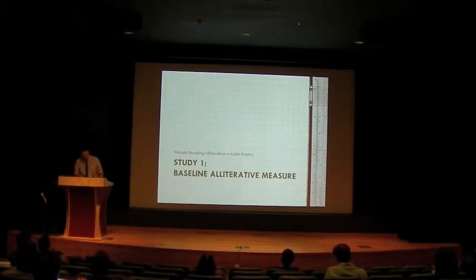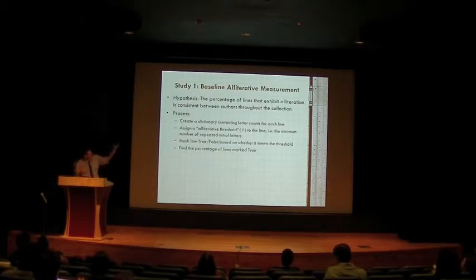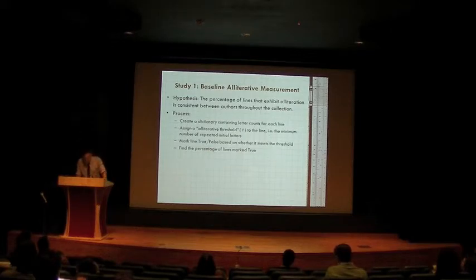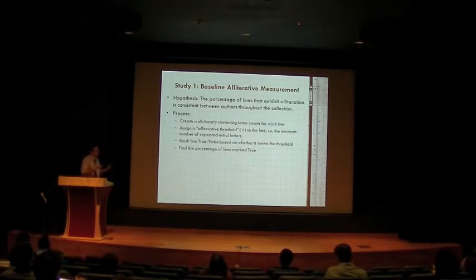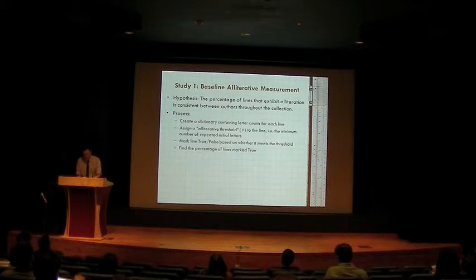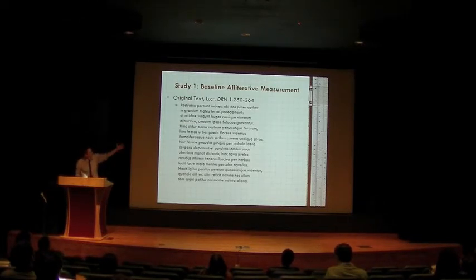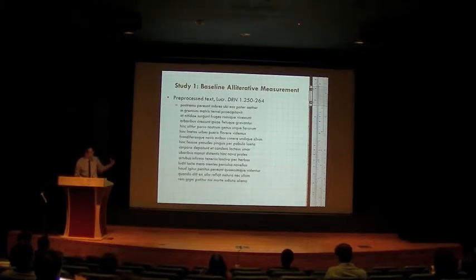I wanted to start with as distant a reading as possible of my data set and figure out what's going on in general. The hypothesis: the percentage of lines that exhibit alliteration is consistent between authors throughout the collection. For a given author, I create a dictionary of the letter counts for each line, assign an alliterative threshold, and if something meets that threshold in the line it's marked as true — then I find the number of true lines over the total number of lines. Here's the original text after stripping from the XML file: pre-process, lowercase, remove punctuation, remove line numbers — all done automatically with regex.